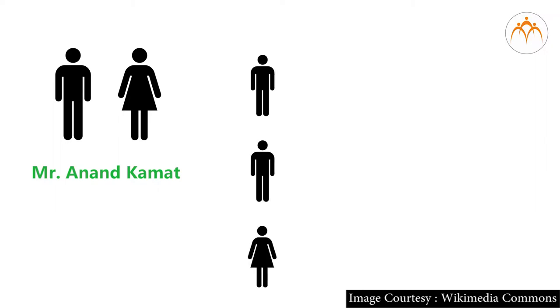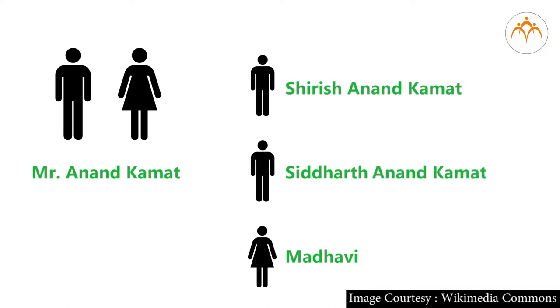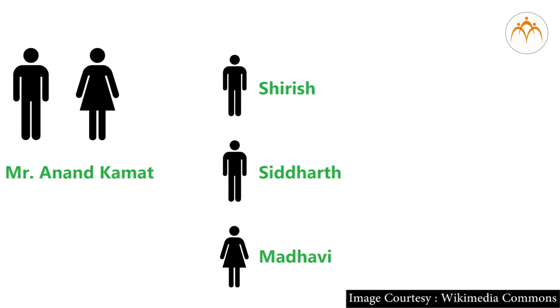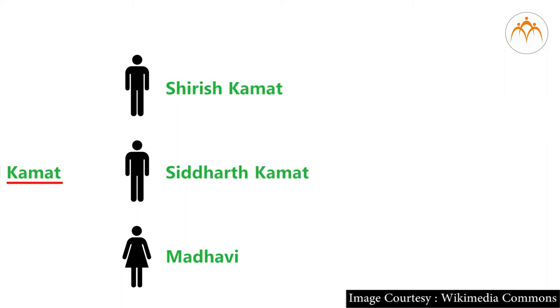Every day you meet many people including family members, friends, teachers, or neighbors. Each one of them has a specific name. We usually follow a system of using a name and surname, so in a family all members have the same surname but the first name of each person is different. For example, Mr. Anand Kamath and his family members. Anand has three children: Shirish, Siddharth, and Madhavi. Hence their names would be Shirish Anand Kamath, Siddharth Anand Kamath, and Madhavi Anand Kamath.